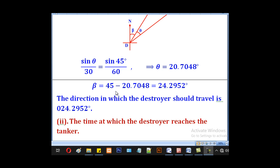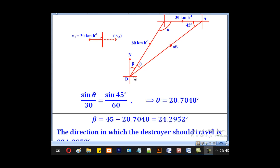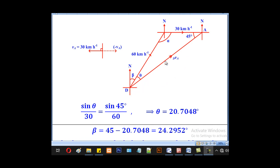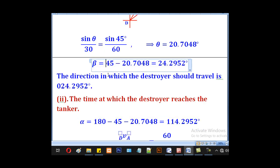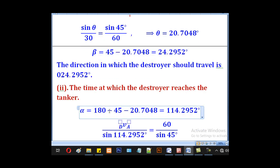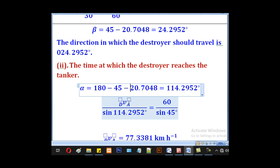So part 2, they want the time at which the destroyer reaches the tanker. That time will be found by getting this distance DA with the velocity. We know that time is distance over speed. So we shall get this distance divided by relative velocity and that will give us the time. So we have to first get relative velocity. We shall get it from sine rule. Since we know this angle, we shall first get alpha since these are angles of a triangle. Now that we know beta, we can get alpha. So 180 minus 45 minus 20.7048 to get 114.2952 degrees.